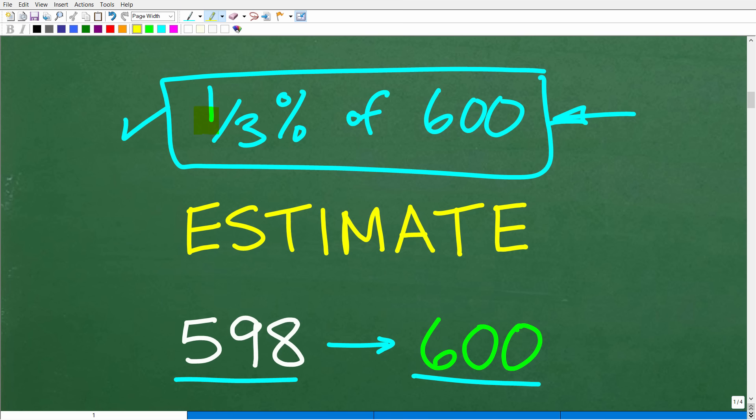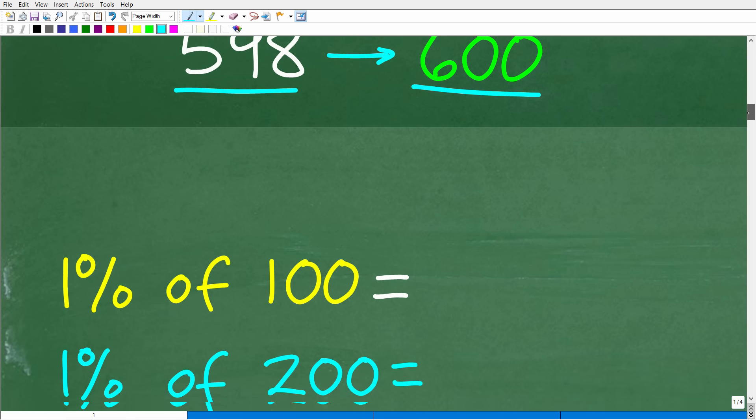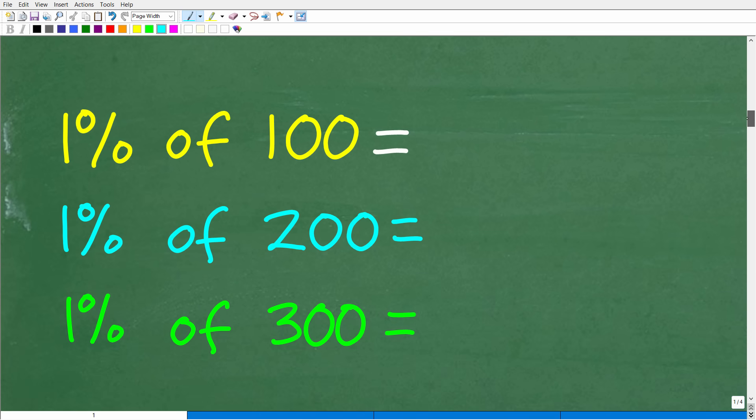So now what we have to talk about is the strategies to find the percent of a number just using our brain. Okay, so how would we do this? Well, the easiest way to do this is just to kind of review basic percent.